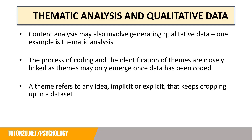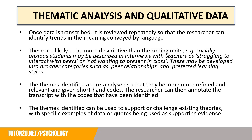We've considered how content analysis and coding can create quantitative data. However, content analysis might also involve generating qualitative data, normally in word form — one example is thematic analysis. The process of coding and the identification of themes are closely linked, as themes may only emerge once data has been coded. This is why the first step of content analysis should always be to code your data. If you then wanted to turn these codes into qualitative data, you could undergo thematic analysis. A theme refers to any idea, implicit or explicit, that keeps cropping up in a data set.